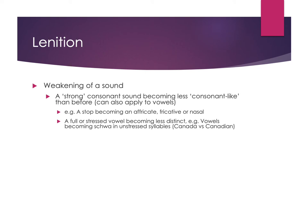With vowels, lenition typically happens when a full or stressed vowel becomes less distinct or unstressed. In English, vowels frequently become schwa in unstressed syllables. The example of 'Canada' versus 'Canadian' shows this: in 'Canada', the A in the first syllable is its full realized sound, but in 'Canadian' it becomes schwa because it's no longer stressed. Conversely, in 'Canadian', the second vowel A — which was schwa in 'Canada' — is now stressed and fully realized.